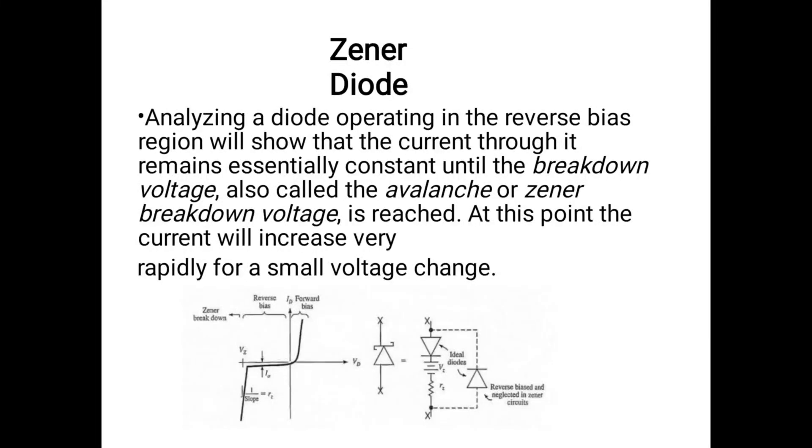Next topic, the Zener diode. Analyzing a diode operating in the reverse bias region will show that the current through it remains essentially constant until the breakdown voltage, also called the avalanche or Zener breakdown voltage, is reached. At this point, the current will increase very rapidly for small voltage changes.